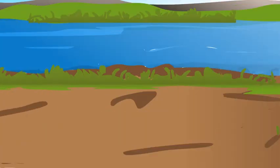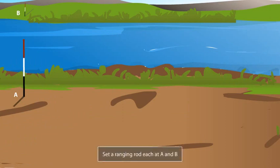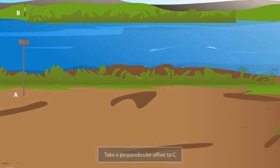Let's say you have to find the distance between two points A and B which are separated by a river. The river is the obstacle to chaining but not to ranging. To find the distance between A and B, set a ranging rod each at A and B. Then, take a perpendicular offset at A to point C with the cross staff. Set a ranging rod at C.